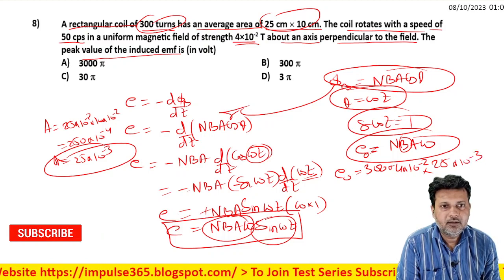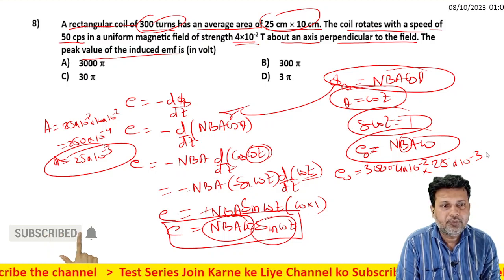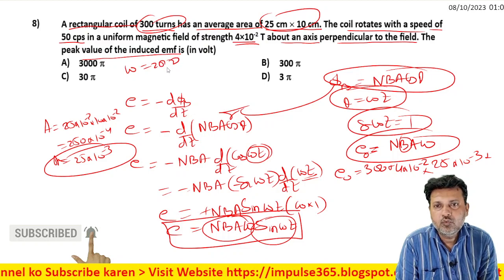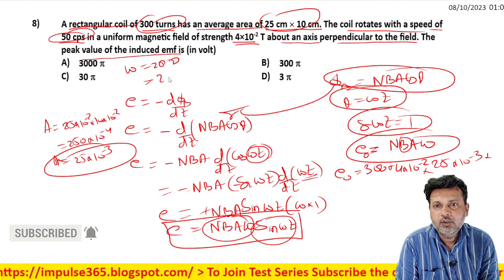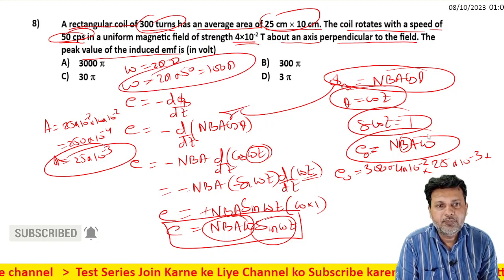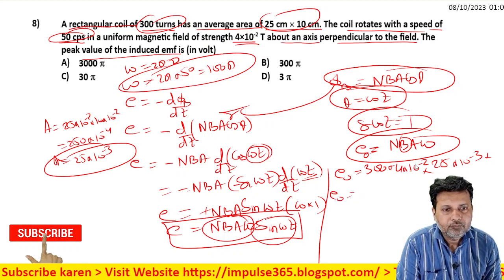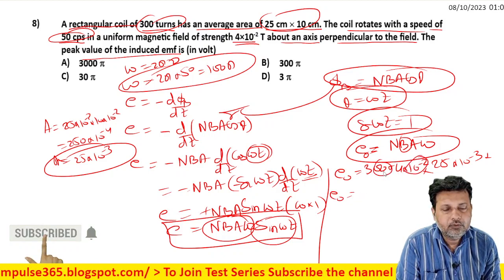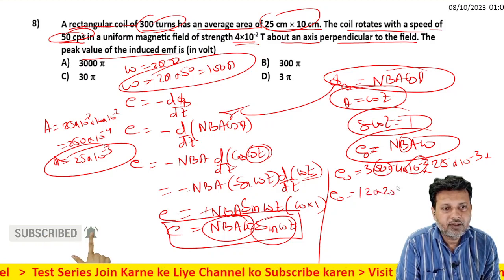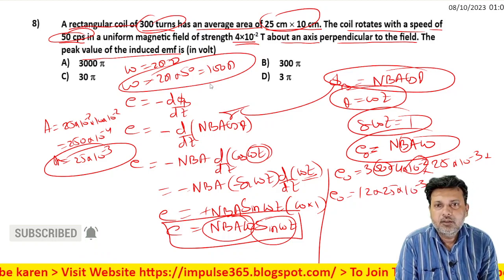ω = 2πf = 2π × 50 = 100π. So e₀ = 300 × 4×10^-2 × 25×10^-3 × 100π. This simplifies to 12 × 25 × π × 10^-1.